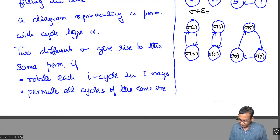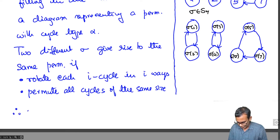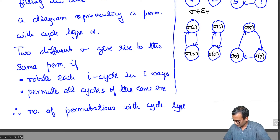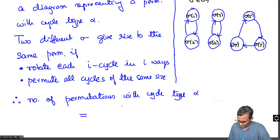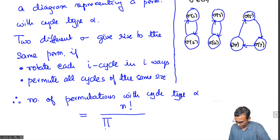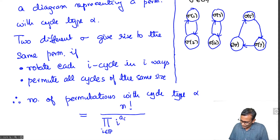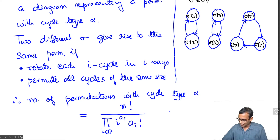We need to divide by the number of such symmetries. Therefore, the number of permutations with cycle type alpha equals N! divided by: for each i, we have a_i i-cycles, giving a factor of i^(a_i) from rotations, and if we have a_i i-cycles we can permute them in a_i! ways. So the denominator is i^(a_i) · a_i! for each i, taken as a product.